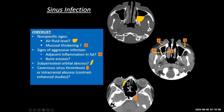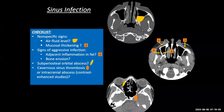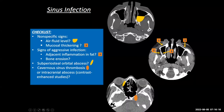If contrast has been given, you have to look for things that don't enhance but should be enhancing. What would be bad if it's not enhancing? On a post-contrast study, if a vein is not enhancing, the vein is likely thrombosed. If you don't see physiologic enhancement in the cavernous sinuses in someone with a severe invasive fungal sinus infection, that's a diagnosis of cavernous sinus thrombosis.